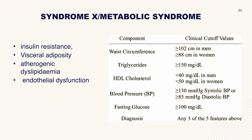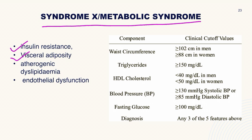Syndrome X or metabolic syndrome is commonly asked in both diabetes and hypertension topics. It is a group of disorders including insulin resistance, visceral adiposity, atherogenic dyslipidemia, and endothelial dysfunction. Individual components include waist circumference ≥102 cm in men and ≥88 cm in women, and triglycerides ≥150 mg/dL.